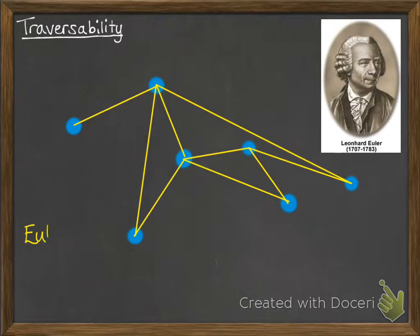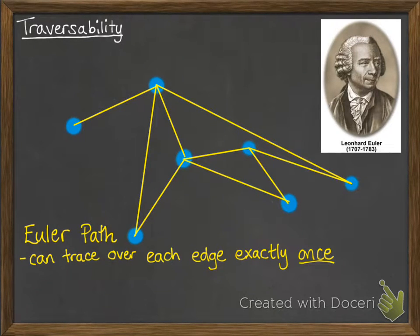You can do this, and that means that you create what's called an Euler path. That means that you can trace over each edge exactly once.